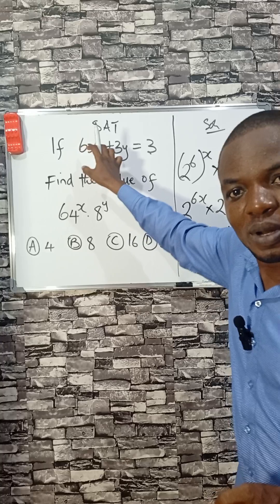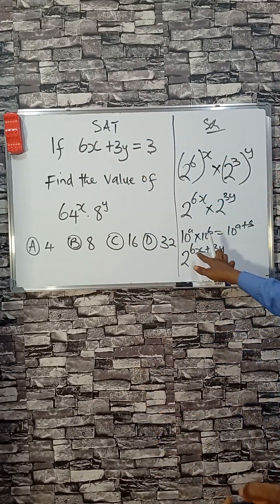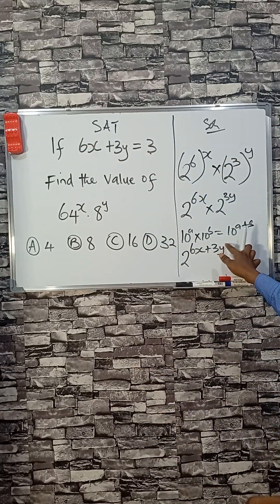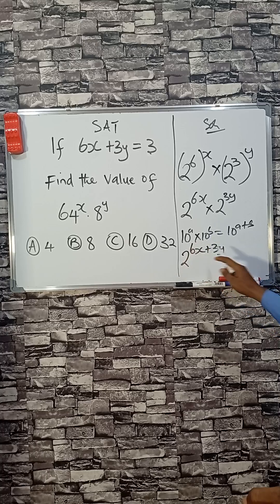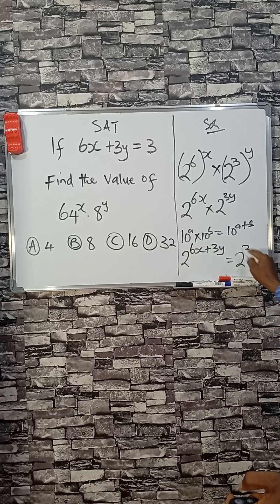...replace it with 3. We have 6x plus 3y, so the whole of this becomes 3. We have 2 raised to the power 3.